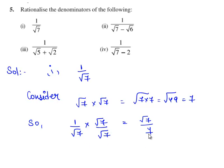Hence the denominator obtained is a rational number. Therefore the rationalized expression for 1 by root 7 is equal to root 7 by 7.